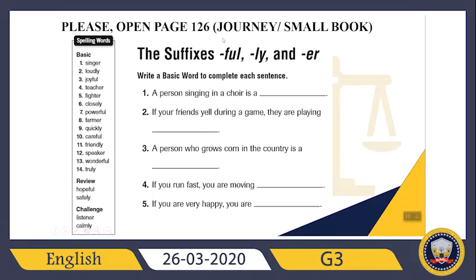Now let's check page 126 from your Journey, which is your small book. It says: write a basic word to complete each sentence. 'A person singing in a choir is a...' If you sing something, you will be a singer. What about the second sentence? 'If your friends yell during a game, they are playing...' If you yell all the time, it will be loudly — they are playing loudly. 'A person who grows corn in the country is a...' If you grow things and live in a village, you will be a farmer.